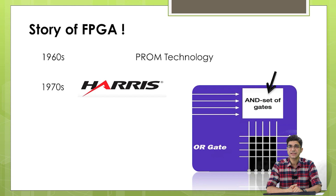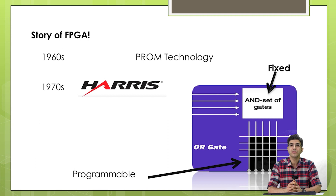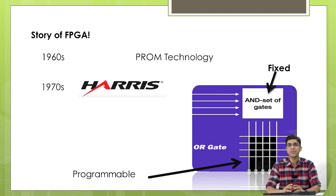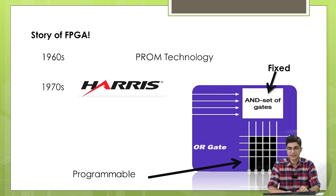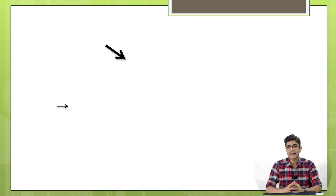In the 1970s, the Harris company was thinking about how you can customize any logic function. Actually, all digital functions can be made with two gates — one is OR and the other is AND. They made a network or array between these two gates. They thought the AND gates could be fixed, and as you can see in the picture, the OR was programmable. This was the start of FPGA.